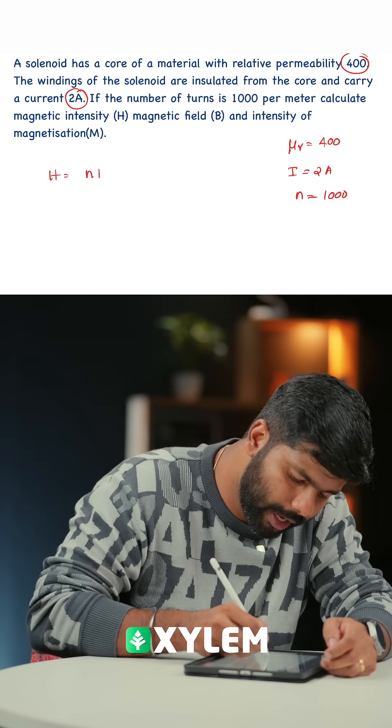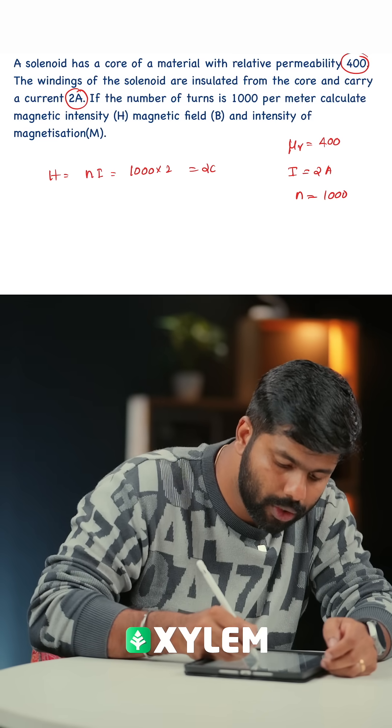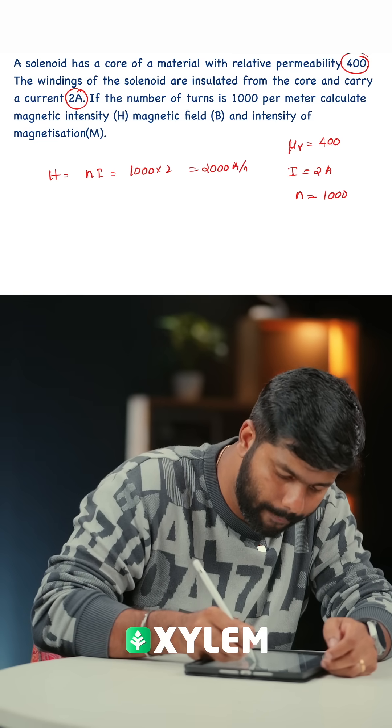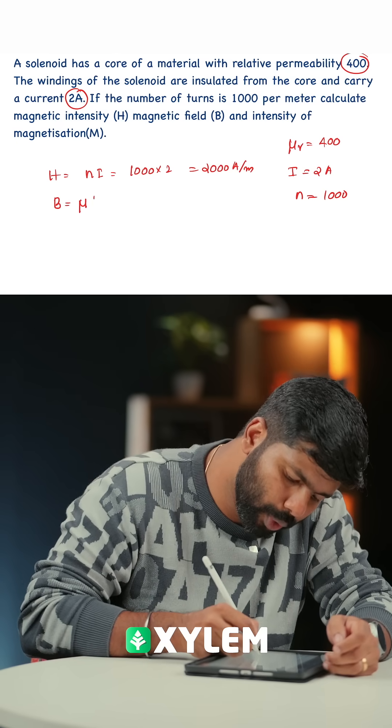So H is equal to Ni. That will be 1000 into 2 equal to 2000A per meter. So magnetic field B is equal to μ into H.